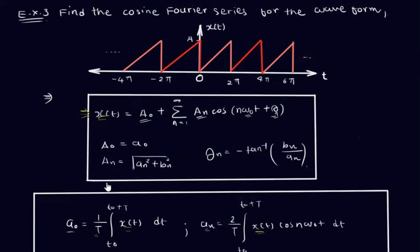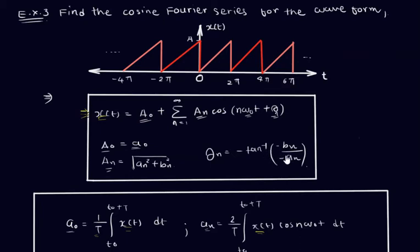The trigonometric Fourier series is the easiest method to find the series in terms of sine and cosine. For the cosine Fourier series, we must calculate both sine and cosine terms. To find capital An, we use √(an² + bn²), and θn = −tan⁻¹(bn/an). Note that the placement of the minus sign matters and will change the quadrant.